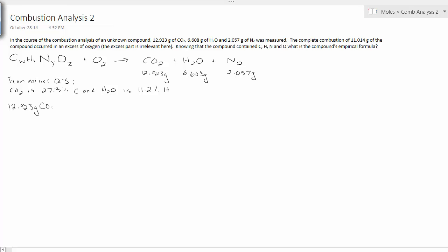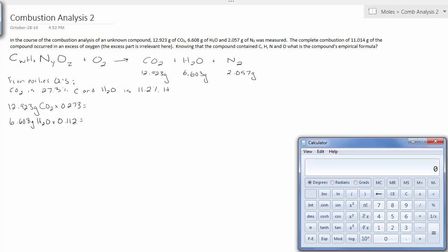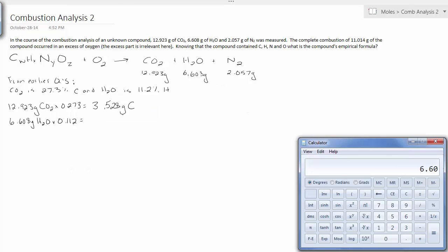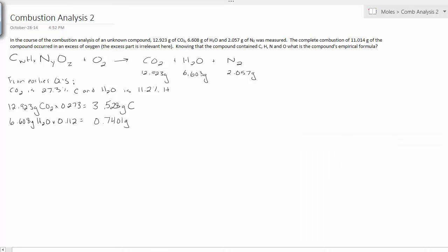So of the carbon dioxide, the 12.923 grams of it, 27% of that belongs to carbon. 11.2% of the 6.608 grams of water belongs to hydrogen. So I'm going to actually get some masses here. Of the 12.9 grams, 3.528 grams of it is carbon. Of the 6.6 grams of water, 0.7401 grams of that belong to hydrogen.